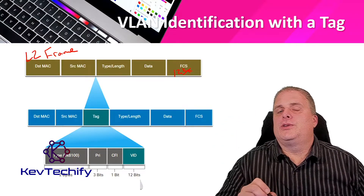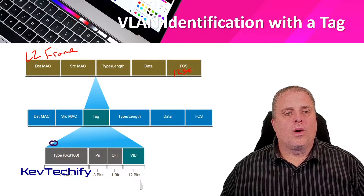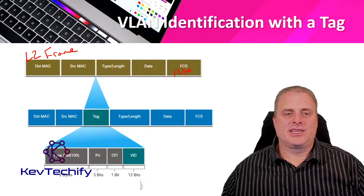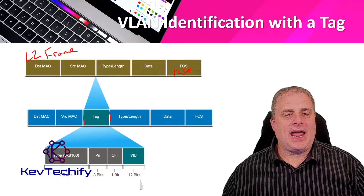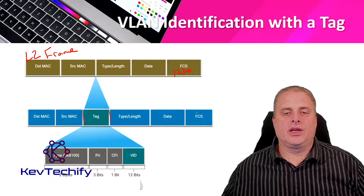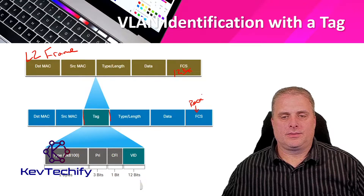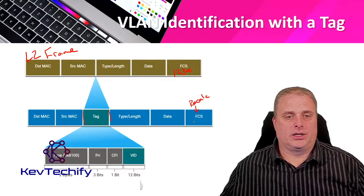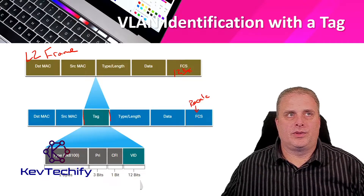If we're using the 802.1Q tagging process for our VLANs, what happens is we take our normal frame and insert a tag between the source MAC address and the type length field. This tag goes right in there. When we insert this tag, we have to recalculate the frame check sequence. This tag insertion happens when the frame goes across a trunk connection.